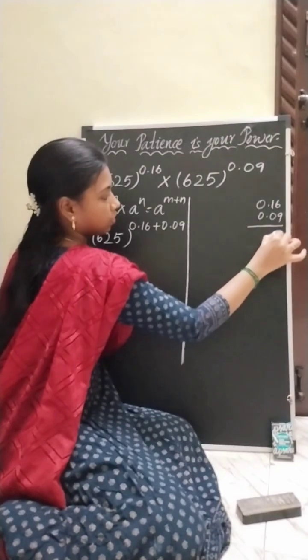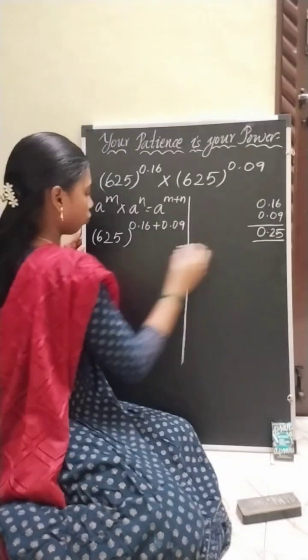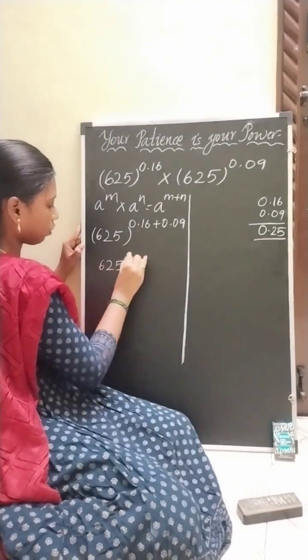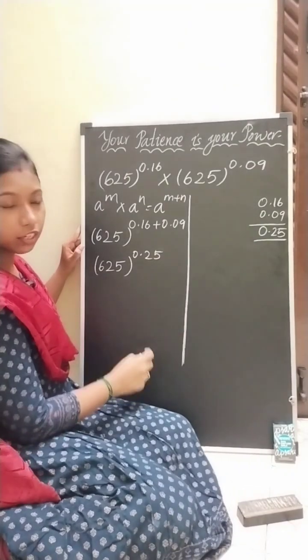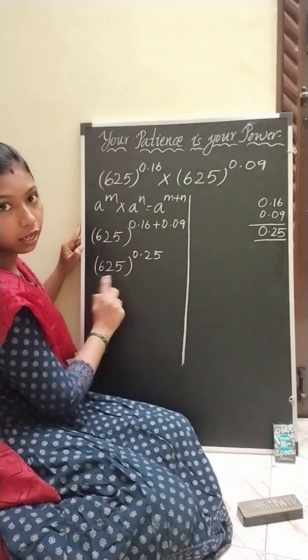So 625 to the power 0.25. Then you have to write 625 as powers of 5.